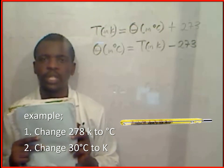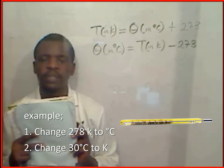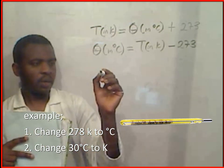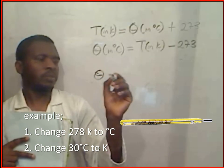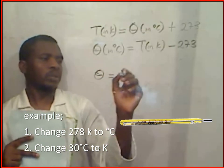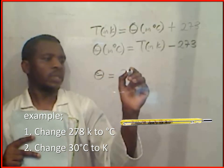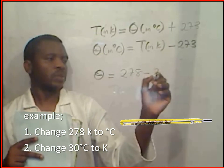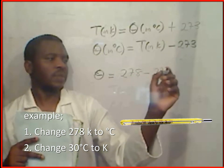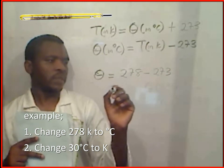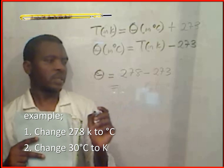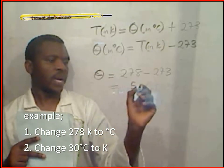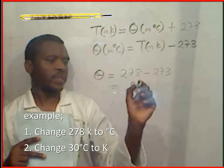Example: Change 278 Kelvin to degree centigrade. The temperature will be equal to 278 minus 273. This gives us 5 degrees centigrade.